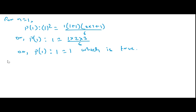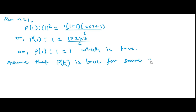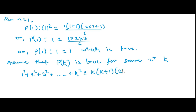Now that P(1) is true, in the second step — where induction is applied — you need to assume that the statement is true for n = k, for some positive integer k. So we can write: 1² + 2² + ... + k² = k(k+1)(2k+1)/6. Let this be equation number 1, which we are assuming to be true.